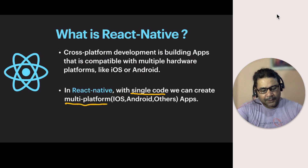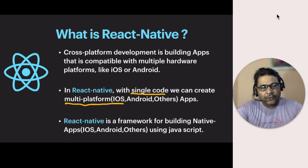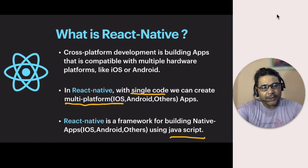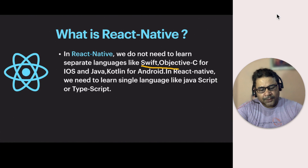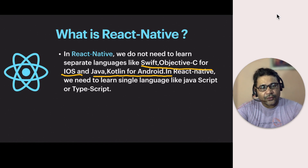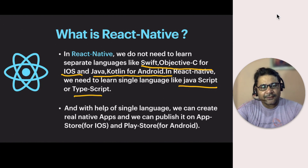React Native is a framework for building native apps using JavaScript. We use JavaScript but create apps comparable to those built with Swift, Objective-C, Java, or Kotlin. The key advantage is that we don't need to learn separate languages for iOS and Android — just JavaScript or TypeScript — and we can publish the resulting app on both the App Store and Play Store.